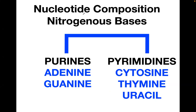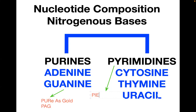The famous mnemonic for purines is 'pure as gold' — PAG, where purines are adenine and guanine. For pyrimidines, pronounce it as 'pie-rimidine' and 'cut the pi': C is cytosine, U is uracil, T is thymine — with special emphasis on uracil, which is only found in RNA. So: 'pure as gold' and 'cut the pi.'